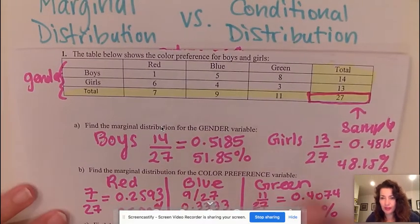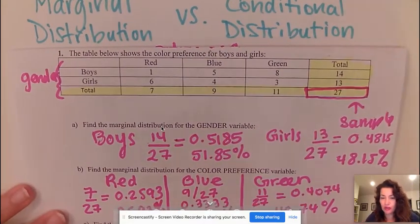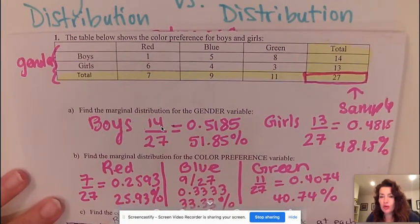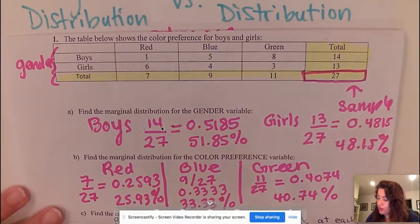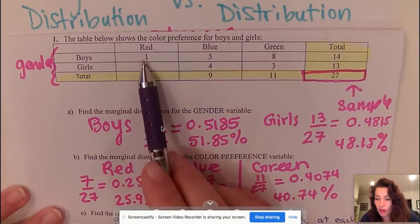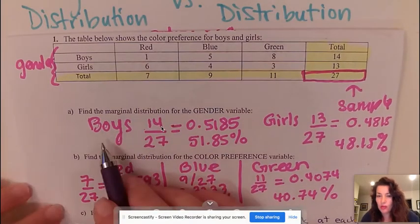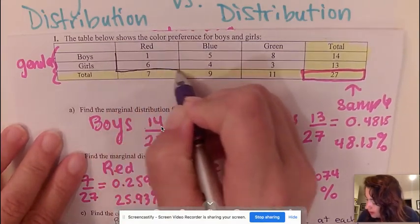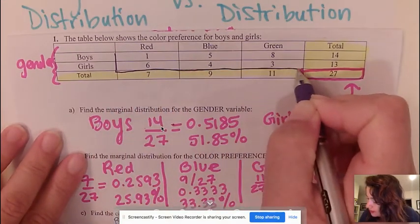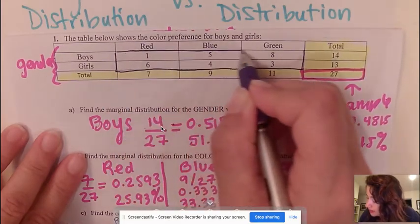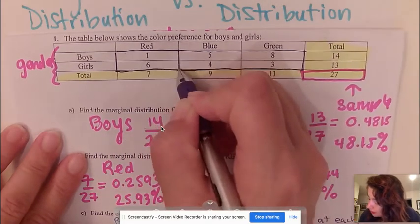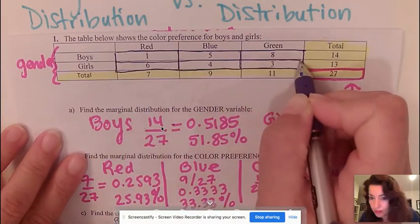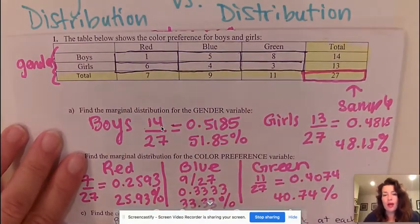Hi, okay, I'm going to continue with conditional distribution. In the last video I did marginal distribution. When you look at conditional distribution, we are now looking only at the cells. The cells are everything but the total of your two-way table. So here's my two-way table and my cells are what I am right now highlighting.